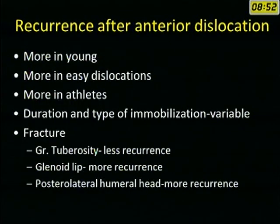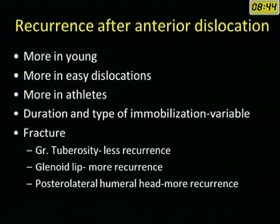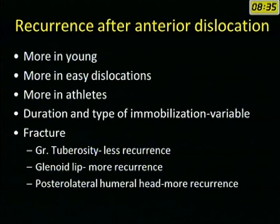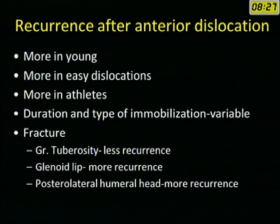The factors which cause recurrence include: it is more common in young people, more in people where the energy causing the first dislocation was less, more in athletes and people involved in contact sports. The duration and type of immobilization has variable effect on recurrence. Fracture of the glenoid lip and the posterolateral humeral defect has more recurrence, while the greater tuberosity fracture has less recurrence.